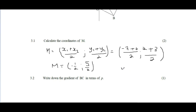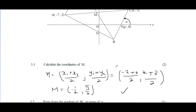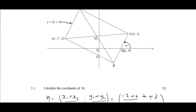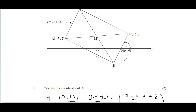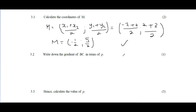Next question: write down the gradient of BC in terms of p. BC is parallel to AD, and parallel lines have the same gradient, so the gradient is 2. However, the question specifically asks for the answer in terms of p, so writing just '2' would be wrong.